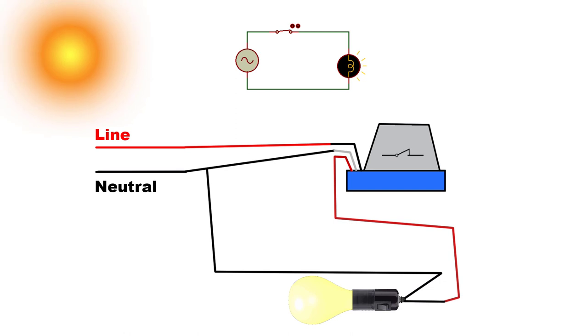When the sun returns, the sensor will detect light and the switch will open the circuit. Super easy.